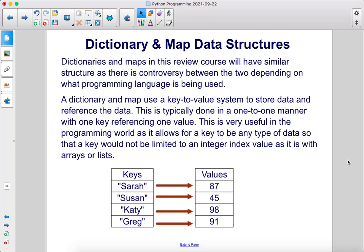Dictionaries and maps in this review course will have similar structure, as there is controversy between the two depending on what programming language is being used. A dictionary and map use a key-to-value system to store data and reference the data. This is typically done in a one-to-one manner with one key referencing one value. This is very useful in the programming world as it allows for a key to be any type of data, so that a key would not be limited to an integer index value as it is with arrays or lists.